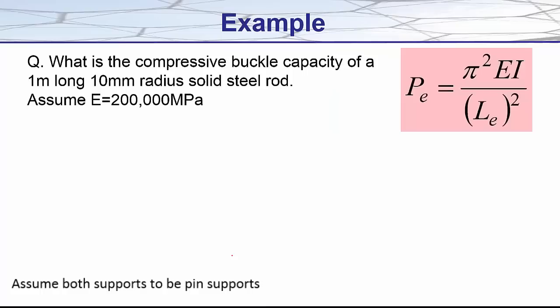Let's do a quick example. We have a 1m long 10mm radius solid steel rod. What is its compressive buckle capacity? The Young's modulus of steel is 200,000 megapascals. Calculating I now we would substitute in for our radius which would give us a value of 7854 millimeters to the fourth.